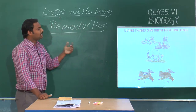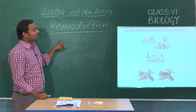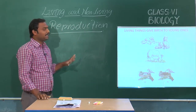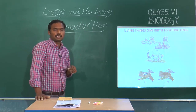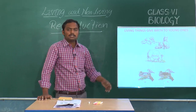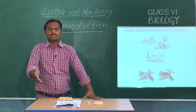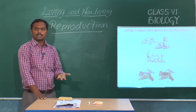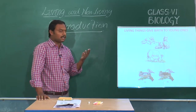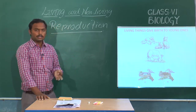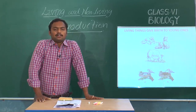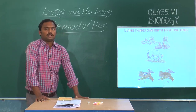Reproduction is one of the important characteristic features we can see in living forms. Whereas in non-living things, will you see any production of young ones? Will a table produce its young one? No. Will a chair produce its young one? No. Non-living forms cannot grow, cannot breathe, cannot excrete, and cannot reproduce their young ones.